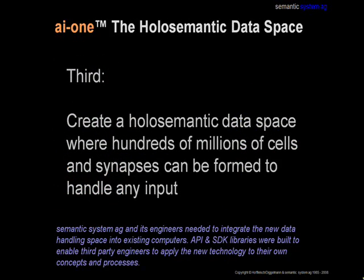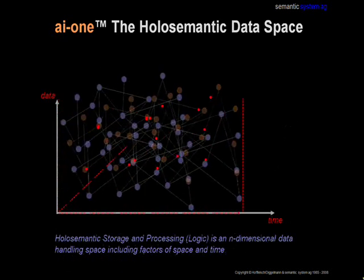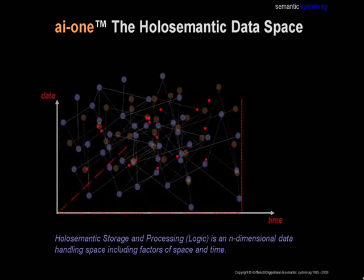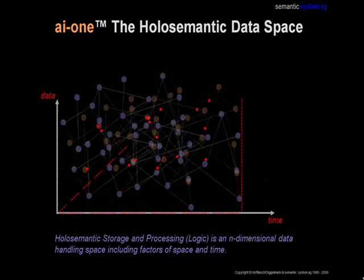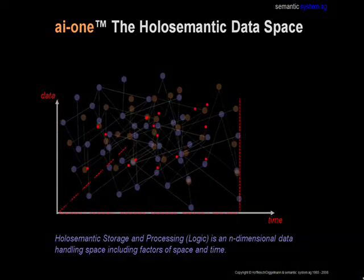Our third step was to create a holosemantic data space where hundreds of millions of cells and synapses can be formed to handle any type of input. This is an animation of the holosemantic data space. Within this space, the thinking process takes place. This data space is n-dimensional, including space-time. Millions of cells fire and communicate simultaneously.